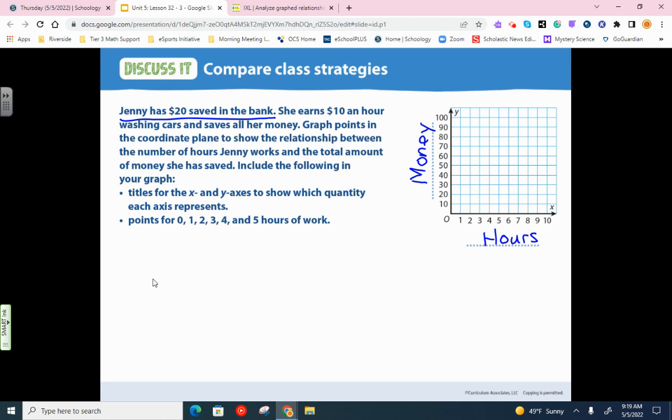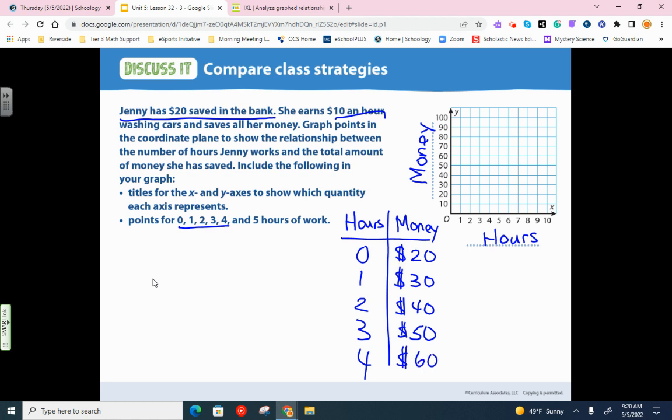Off to the right for you, I'm going to make this T-chart. And let's start with your hours over here and then your money over here. So starting at hour zero, because it wants us to document zero, one, two, three, and four. Before she even starts working at all, she already has the $20 in the bank. So there's that. She makes $10 an hour. So after one hour, that $20 becomes $30. If she works two hours, it becomes $40. If she works three hours, it becomes $50. And if she works four hours, that's $60.